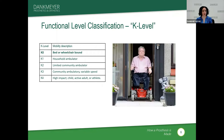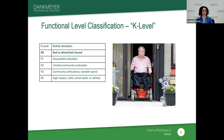We'll go through each of the K-levels to give you a basic understanding of what they mean. Our K-0s are our bed or wheelchair-bound patients — people who would not benefit from a prosthesis for ambulation purposes. In fact, a prosthesis would probably get in the way of their ability to maneuver around either their home or the community. So for the K-0s, there is no medical necessity for a prosthesis.